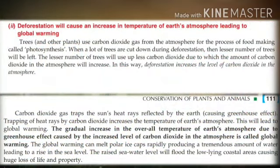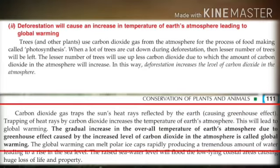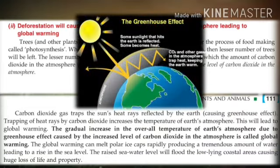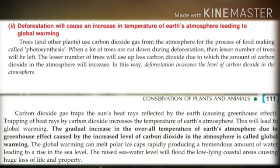Now let us learn what is the greenhouse effect. Carbon dioxide gas traps the sun's heat rays reflected by the Earth, causing the greenhouse effect. It is because of the greenhouse effect that the temperature at nighttime on planet Earth does not go very low.